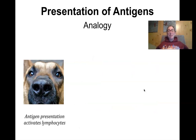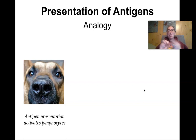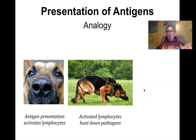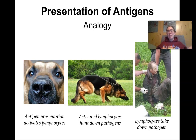An analogy for antigen presentation: think of your lymphocytes — your B and T cells — like trained canine cops. The first thing you have to do if you want the dog to go search and find something is give them something with the right scent — you have to train them to the scent. That's sort of what antigen presentation is. The antigen-presenting cells give the B and T cells something to sniff so they know what to look for. Once the dog — or the B and T cells — know what to look for, they search for it and ultimately find and take it down.